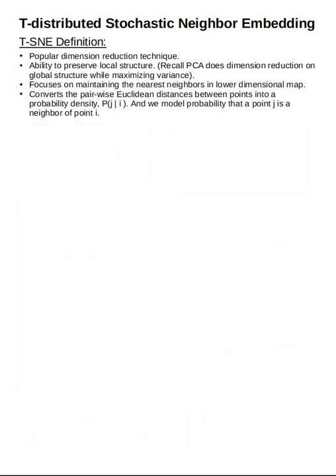T-stochastic nearest neighbor, or T-SNE as it's called, is a popular dimensionality reduction technique which preserves local structures. If you recall from the PCA video — which stands for Principal Component Analysis — PCA focuses on global structure while maximizing variance. However, T-SNE preserves the local structure, and thus dimensionality reduction.